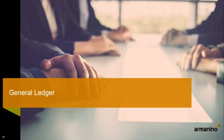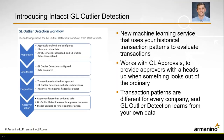Moving to General Ledger, the first new change is the Intact GL Outlier Detection. This is a new AI and machine learning tool open for early adopters, rolled out to those using the approval process within General Ledger. The GL outlier detection uses your historical transaction patterns to evaluate transactions going through the approval cycle and notify approvers of transactions that don't match the regular pattern. It works with GL approvals and helps provide approvers with an extra heads-up when something looks out of the ordinary, giving an extra preventative control measure to help ensure accuracy.